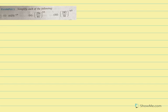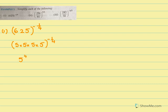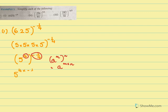Simplify each of the following. For the first one, it is 625 raised to minus 1 by 4. Now 625 is 5 into 5, four times, so 5 raised to 4. This will be 5 raised to 4, all raised to minus 1 by 4. By the law A raised to M raised to N equals A raised to M into N, we multiply the powers: 5 raised to 4 into minus 1 by 4, that is 5 raised to minus 1. And 5 raised to minus 1 is 1 over 5.